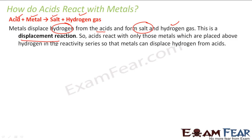We have learned about displacement reactions in the past chapter. You have acid, you add metal to it. The acid is willing to lose a hydrogen ion. The metal is willing to join and create a salt. The hydrogen is displaced by the metal — this is called a displacement reaction.